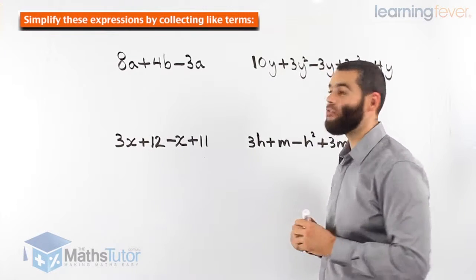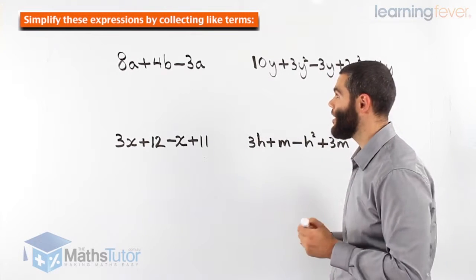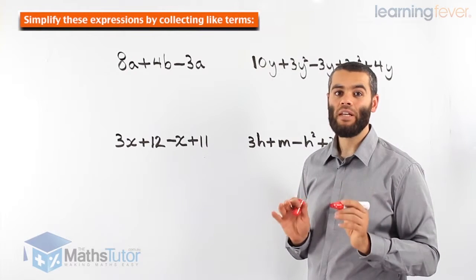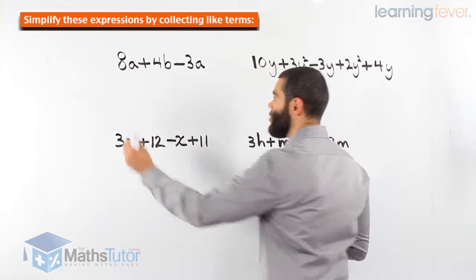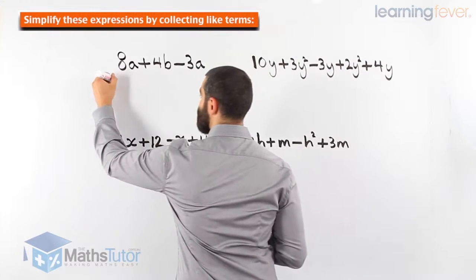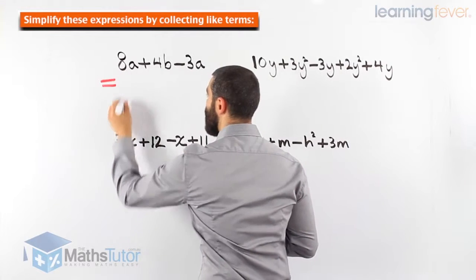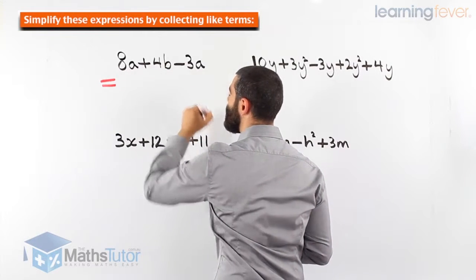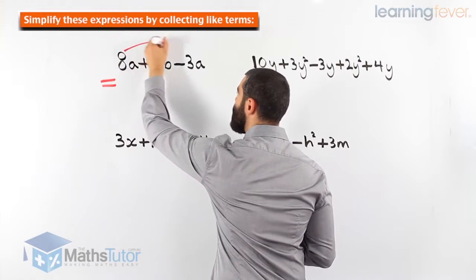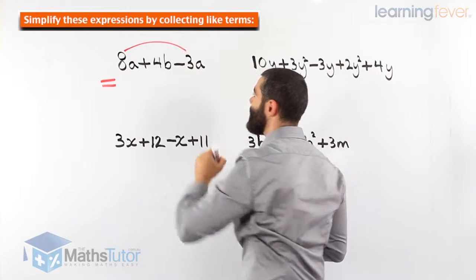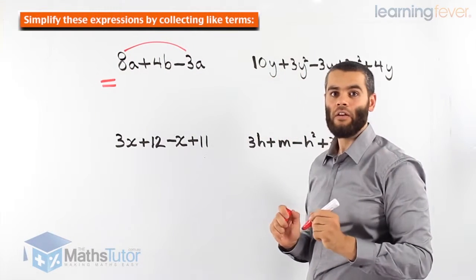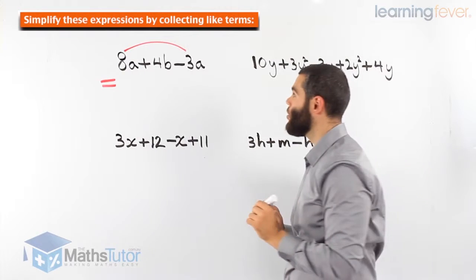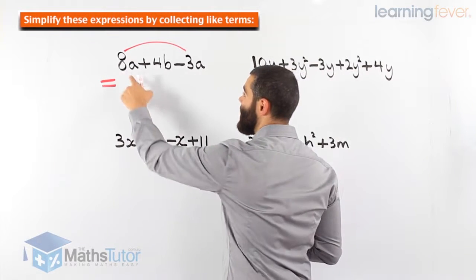8a plus 4b, take away 3a. We know collecting like terms — we only add or subtract the like terms. So: 8a plus 4b minus 3a. Where are the like terms? There they are. I like to show an arrow, and I do advise that you do the same thing; that way you know and you don't get mixed up.